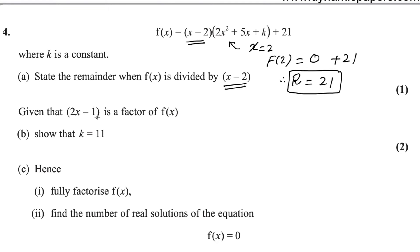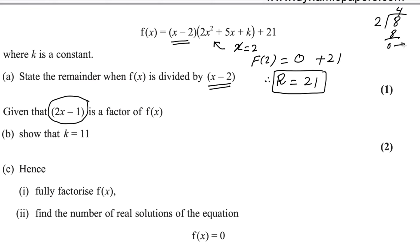Given that (2x minus 1) is a factor of f(x), show that k equals 11. When something is a factor, the remainder is always 0 — just as 2 is a factor of 8 because dividing 8 by 2 gives remainder 0. So you get the value of x from (2x minus 1) and plug it in; that remainder must equal 0.